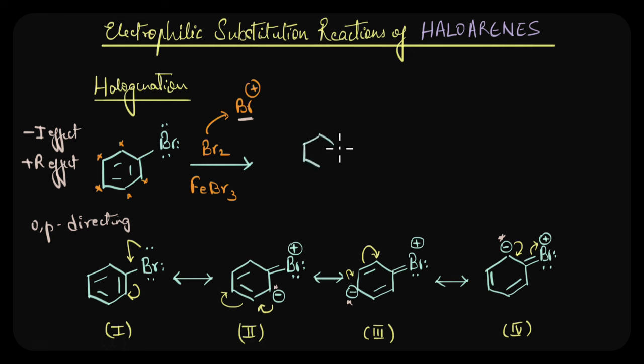So, based on this, the products obtained would be a mixture of ortho and para substituted products. So the para substituted product would be obtained in major amounts while the ortho product would be the minor one.